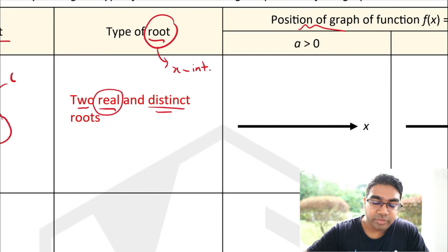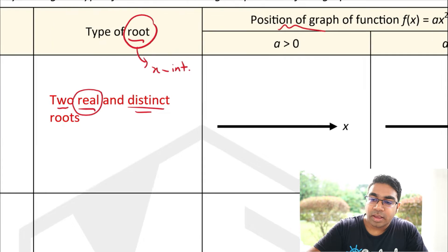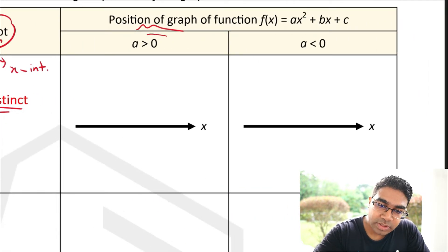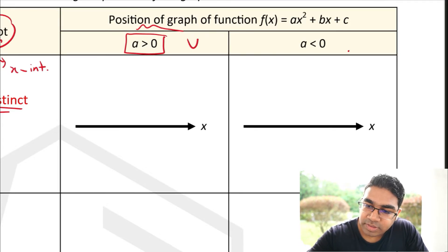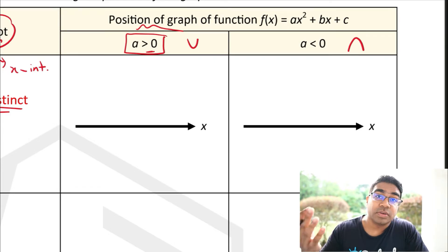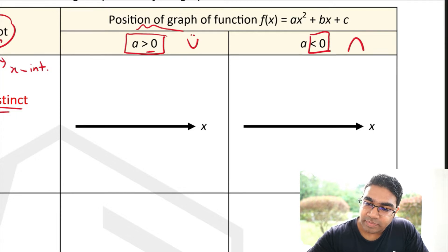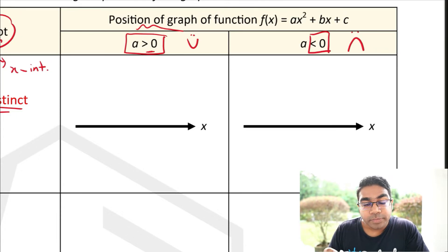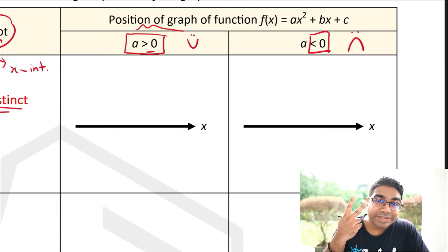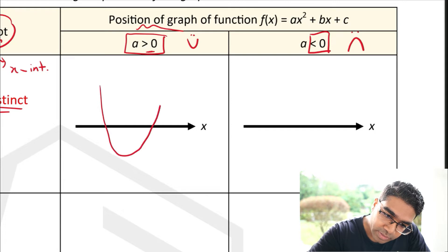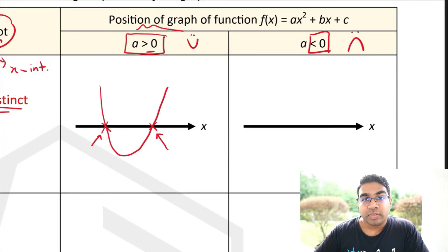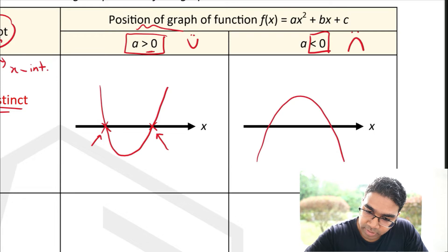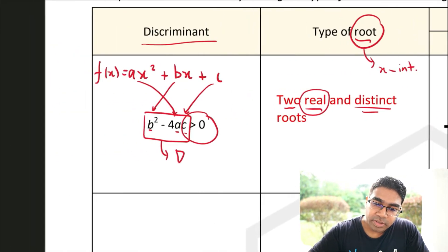If there are two real and distinct roots, there are two real and distinct x-intercepts. The value of a determines the shape: when a is positive, we have a smile, and when a is negative, we have a frown. So with a smile and two real distinct roots, the graph crosses the x-axis at two points. Similarly, with a frown, the graph still has two real and distinct x-intercepts.